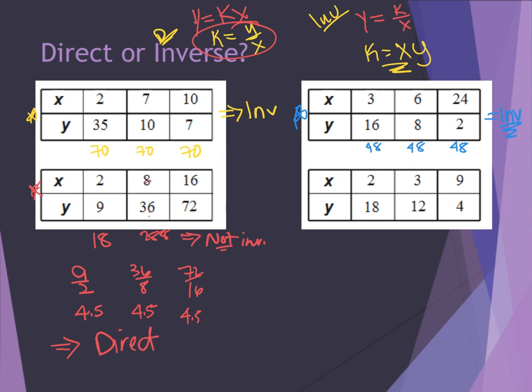For my last data set, 2 times 18 is 36, 3 times 12 is 36, and 9 times 4 is 36. The multiplication for the k value works, so this tells me this is inverse variation. Please let me know if you have any questions. I will see you in class.